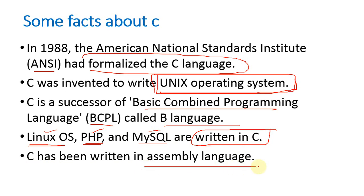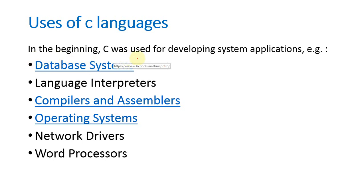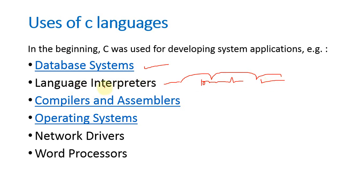C has been written in assembly language — that is an important piece of information about how C was developed. In the beginning, C was used to develop system applications like database systems — meaning DBMS — language interpreters, and compilers. Language interpreters translate high-level statements like print and scan into machine code. Compilers and assemblers translate all statements at a time. Operating systems like UNIX and Linux have been developed using C only.